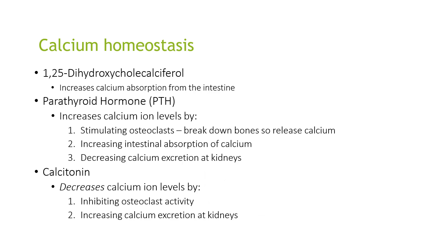1,25-dihydroxycholecalciferol increases calcium absorption from the intestine. PTH increases calcium ion levels by stimulating osteoclasts, increasing intestinal absorption and decreasing calcium excretion at the kidneys. Stimulating osteoclasts results in bone breakdown so that bones release calcium. Calcitonin decreases calcium ion levels by inhibiting osteoclast activity and increasing calcium excretion at the kidneys.